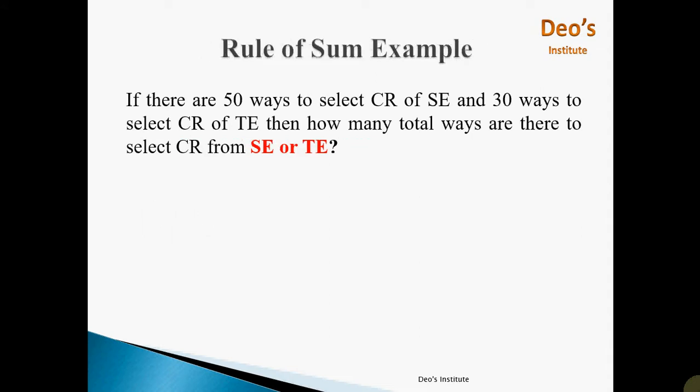The second example: if there are 50 ways to select CR of SE and 30 ways to select CR of T, then how many total ways are there to select CR from SE or T? Now we have to select only 1 common CR from SE or T, so total number of ways are 50 plus 30, that is equal to 80.